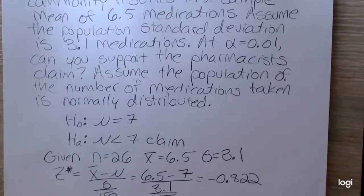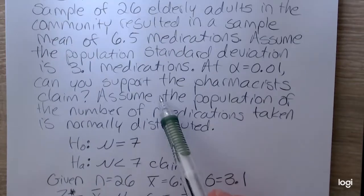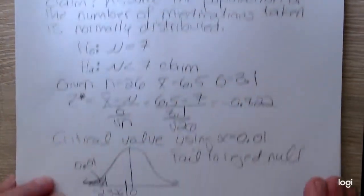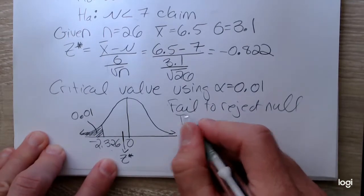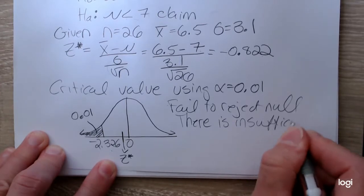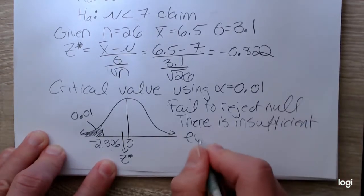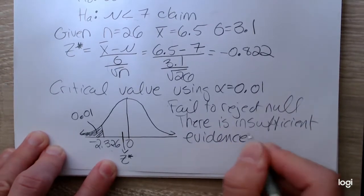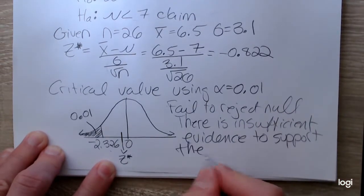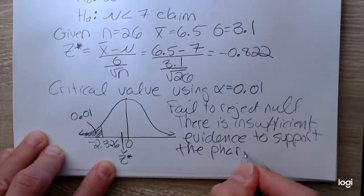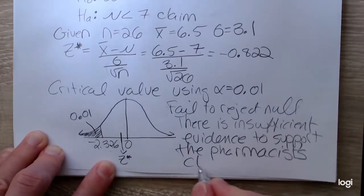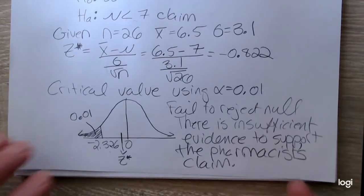And to answer the question, can you support the pharmacist claim? So the correct way to say this, there is insufficient evidence to support the pharmacist claim. Alright, so that's using the critical value method.